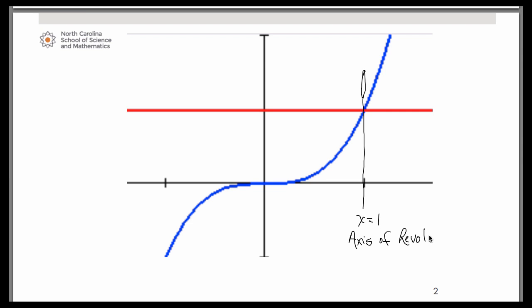So the region that we're talking about is the one that you see in yellow. So if we want to take that region and revolve it around that vertical line x equals 1, imagine taking just that yellow part and flipping it over that vertical line.